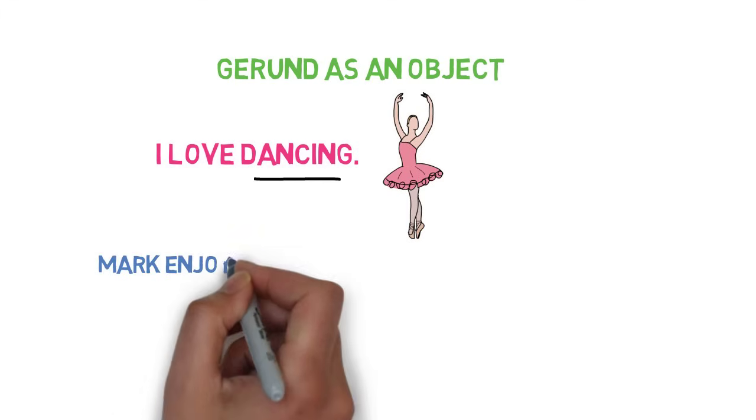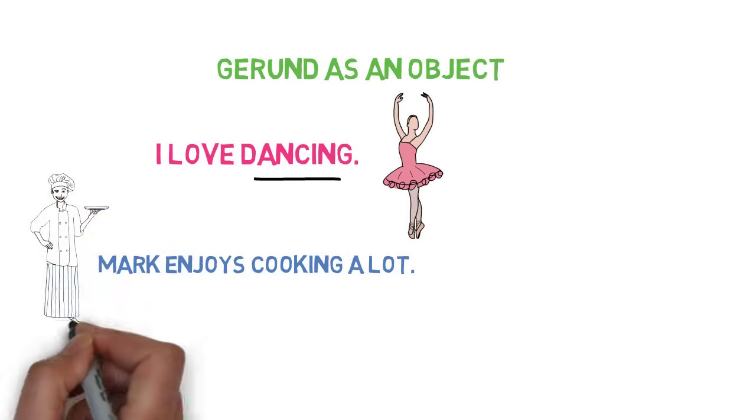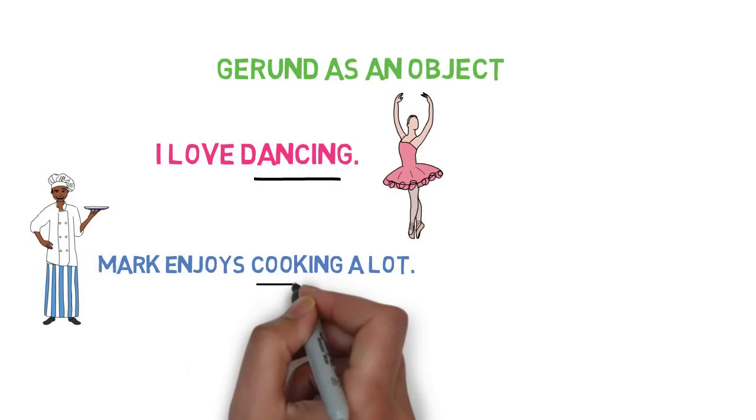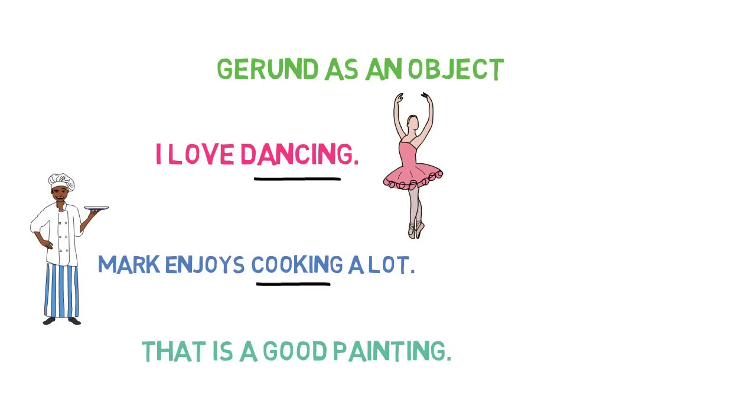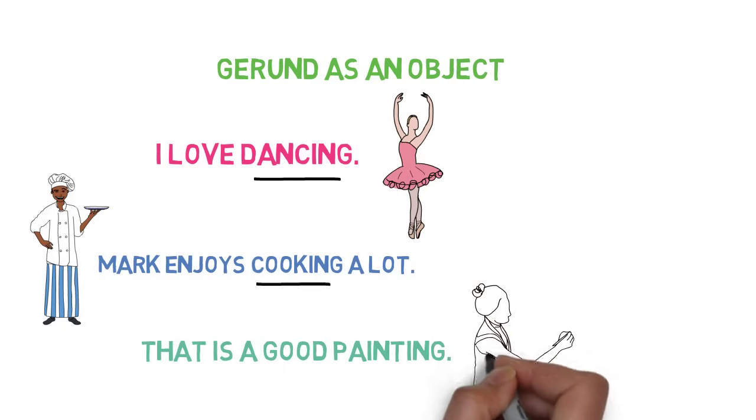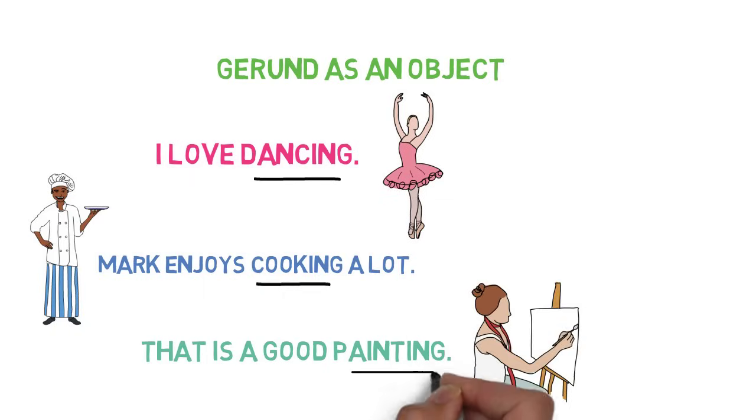Mark enjoys cooking a lot. Here, cooking is a gerund which acts as an object in the sentence. Let's look into one more example. That is a good painting. Here, painting is a gerund which acts as an object in the sentence.